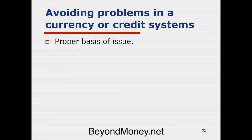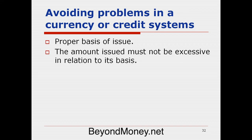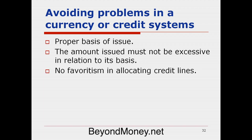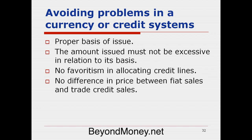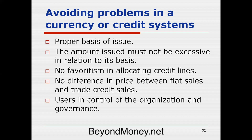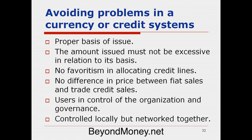To summarize, to avoid problems in a currency or credit clearing system, you need a proper basis of issue — the amount issued must not exceed the available goods and services that can be sold in the near term. There must be no favoritism in allocating credit lines. There must be no difference in price between fiat sales and trade credit sales. The users must be in control of the organization, governance, and the exchange. We have a system that's controlled locally but can be networked together globally.